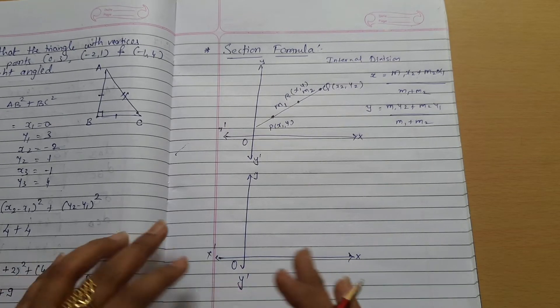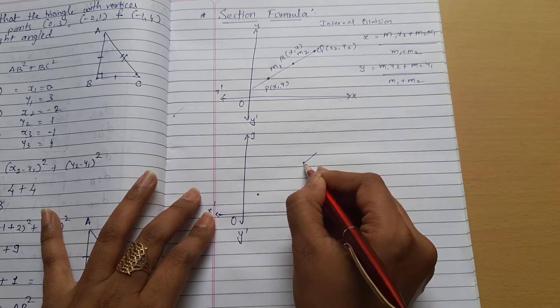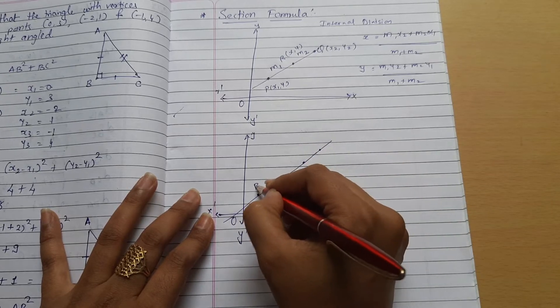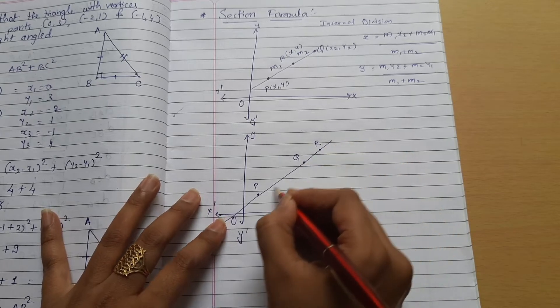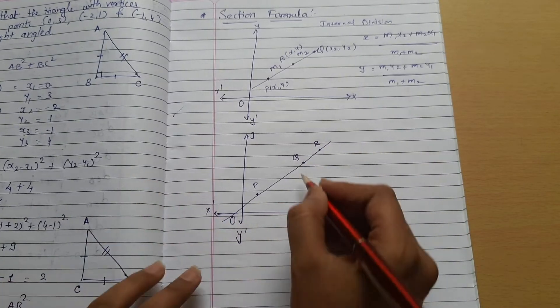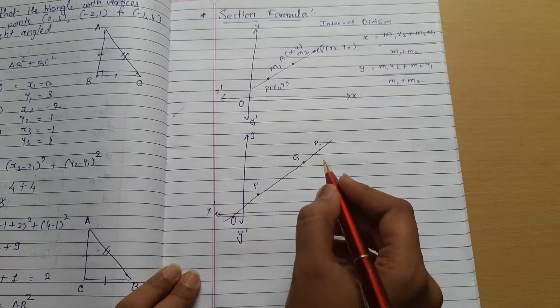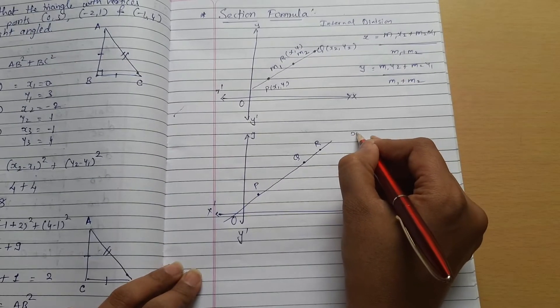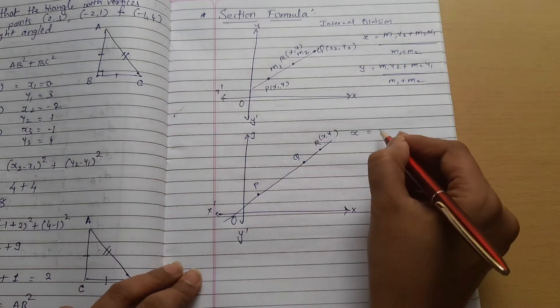Now, the point may divide the line not from within the two points. It may be possible the point is outside, the line can extend to either side. It may be possible that the line is divided externally.